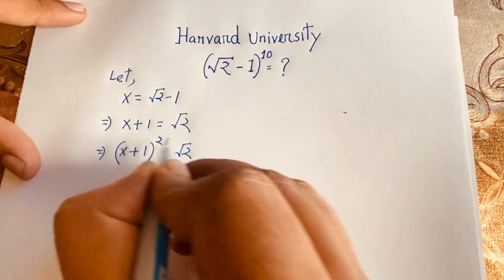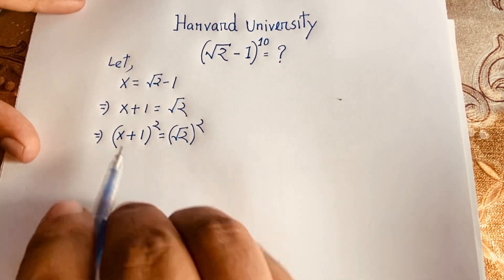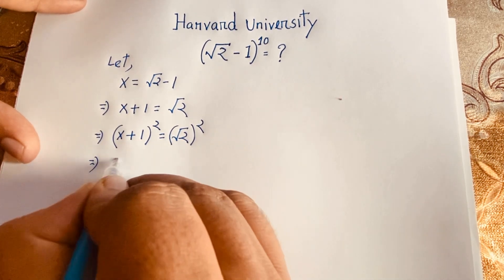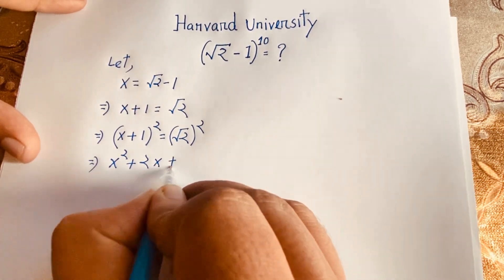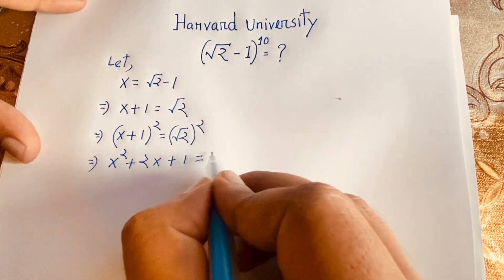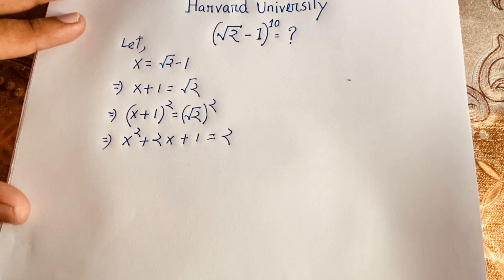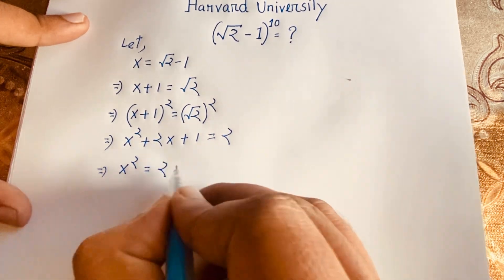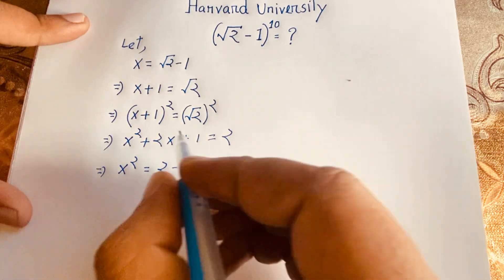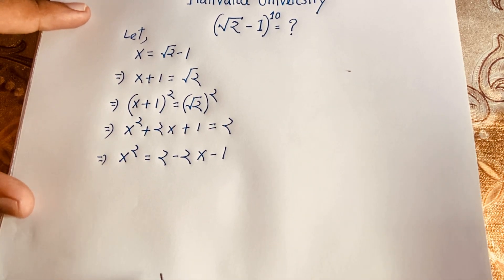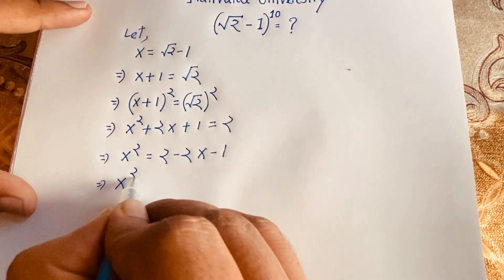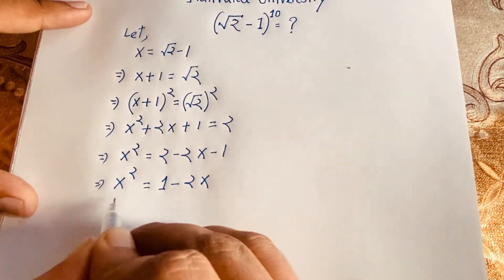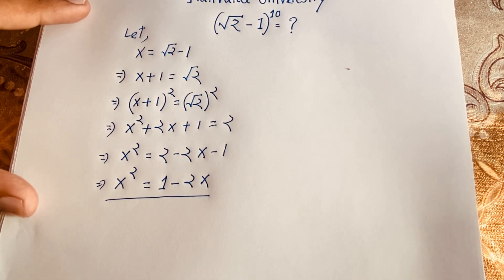Using the identity (a + b)² = a² + 2ab + b², squaring both sides gives x² + 2x + 1 = 2. Moving terms across, x² = 2 - 1 - 2x, so we find x² = 1 - 2x.